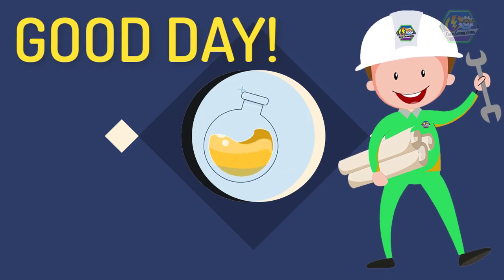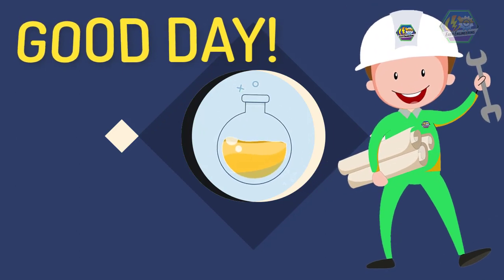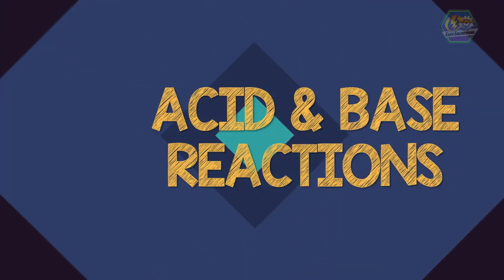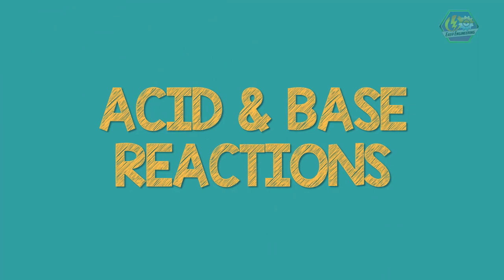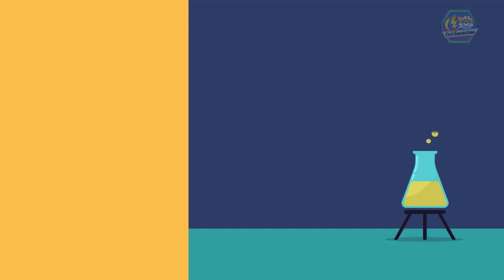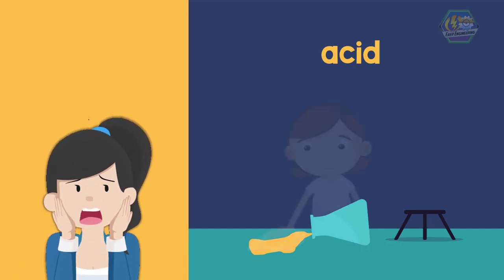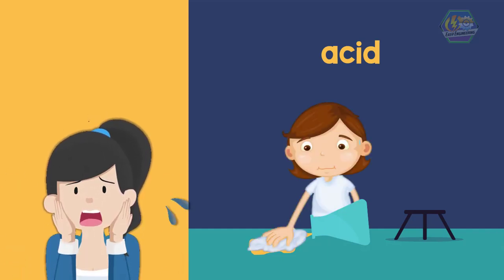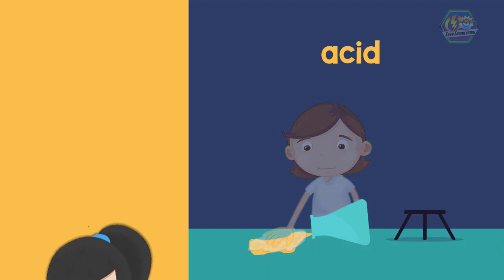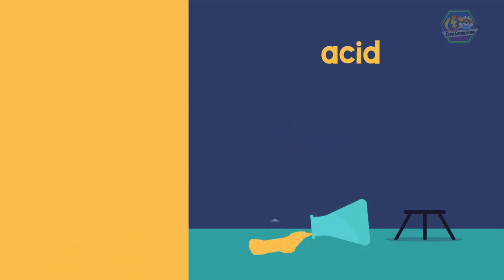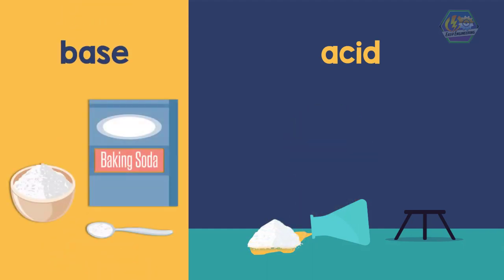Good day learners, this is Easy Engineering. This time we're going to talk about acid and base reactions. In a chemistry laboratory, for instance, if you spilled an acid on the floor, what would you do? Some of us would panic or wipe the spilled acid with paper, but the best thing to do is to put a base on the spilled acid on the floor.